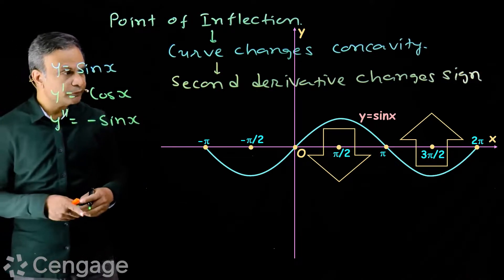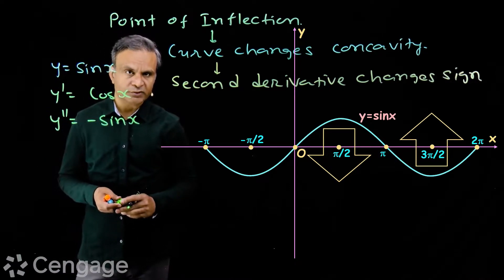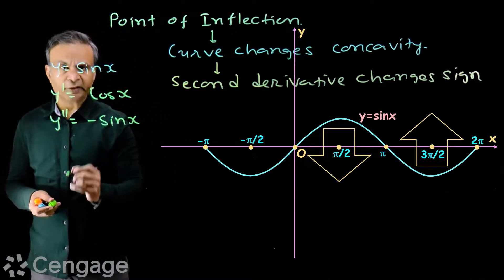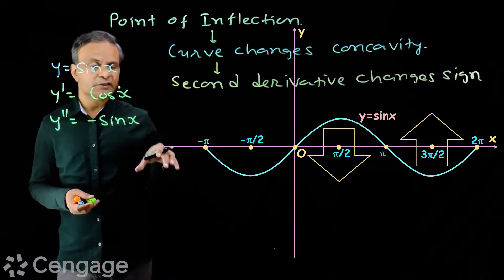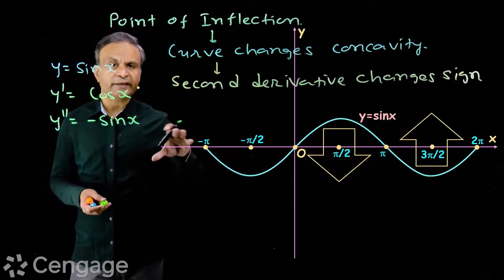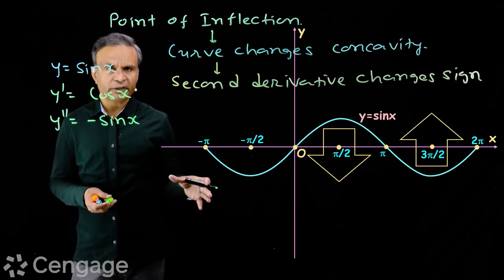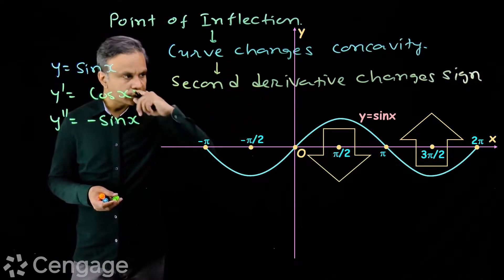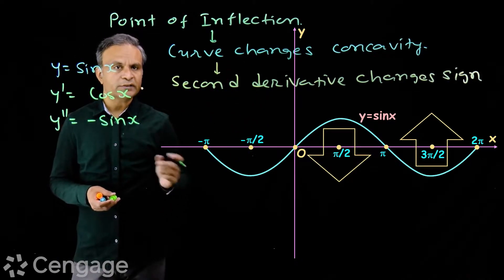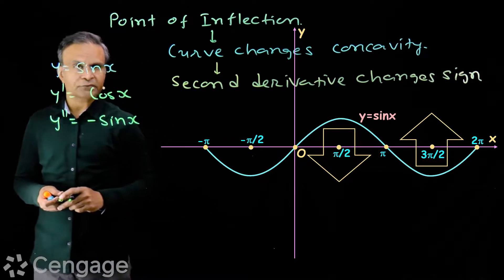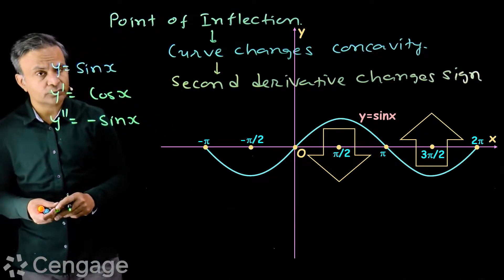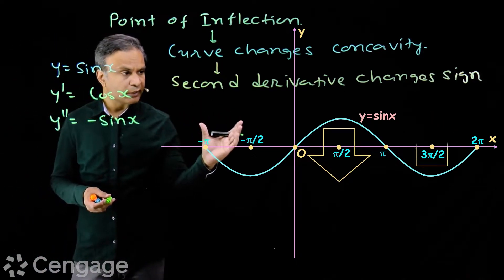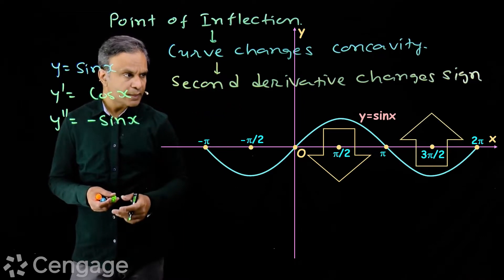In the first and second quadrants, sin x is positive, so y'' = −sin x will be negative — the graph is concave downward. In the third and fourth quadrants, sin x is negative, so −sin x will be positive — the graph is concave upward.